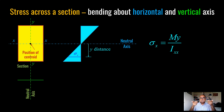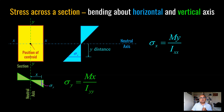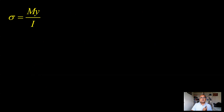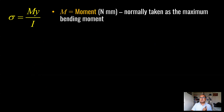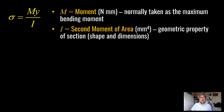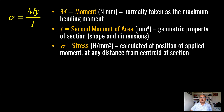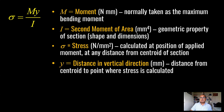If I am holding a ruler in the weak orientation, it is applying moment in the Y direction and you can see it will bend quite a lot — that is minor axis bending. The distance from the neutral axis in this case is termed as X, so Sigma Y is equal to M times X divided by I-YY, where I-YY is the second moment of area in the minor axis direction. M is normally taken as the maximum bending moment. Y is the second moment of area, a geometric property depending on section dimensions. Sigma is calculated at any distance from the centroid of the section.